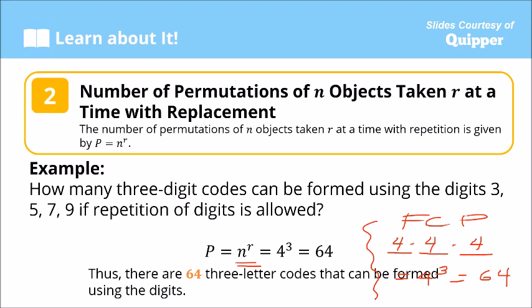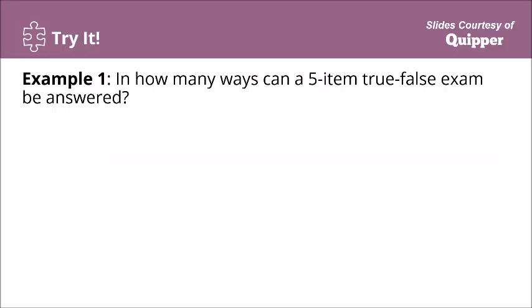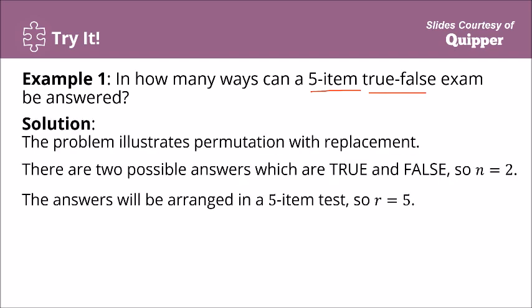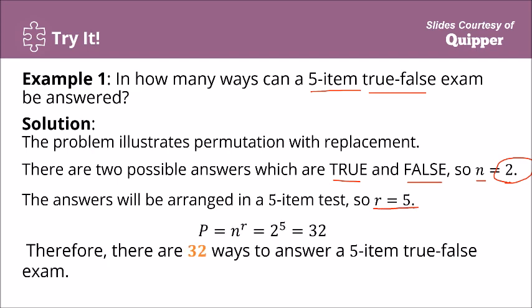Thus there are 64 three-digit codes that can be formed. Next example: In how many ways can a five-item true or false exam be answered? There are two possible answers — true and false — so n equals 2. The answers will be arranged in a five-item test so r equals 5. Therefore P equals 2 to the power of 5, which equals 32. There are 32 ways to answer a five-item true or false exam.